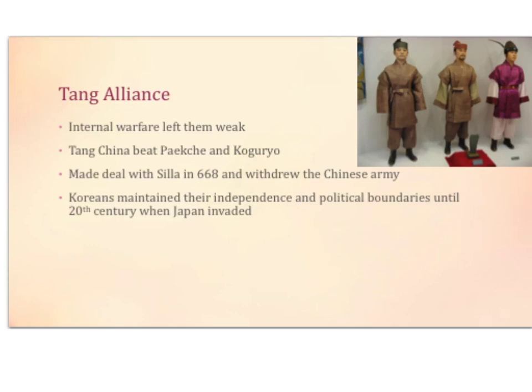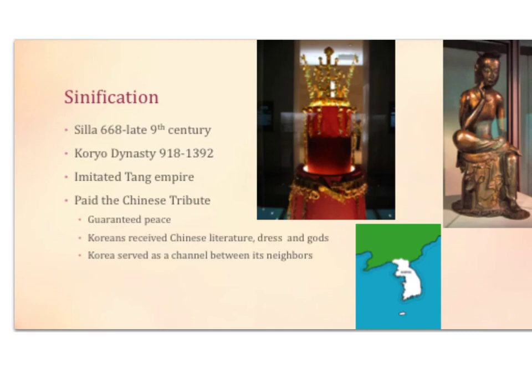There's a Tang alliance — Tang referring to China. Within the three kingdoms, there is internal warfare which makes them weak. Tang China is able to defeat Baekje and Goguryeo, and made a deal with Silla in 668 and withdrew the Chinese army. Koreans are able to maintain their independence and political boundaries until the 20th century when Japan invades them. Sinification — the establishment of Chinese culture — is highly evident under the Kingdom of Silla from 668 to the late 19th century, as well as the Koryo dynasty from 918 to 1392. They imitated the Tang Empire, paid the Chinese tribute which guaranteed peace, and Koreans received Chinese literature, dress, and goods. Korea served as a channel between its neighbors.